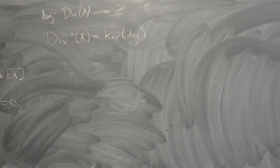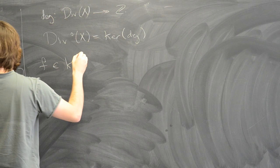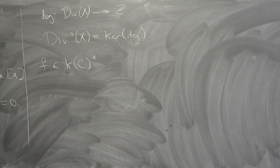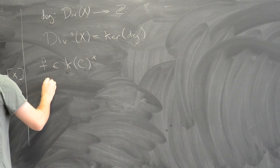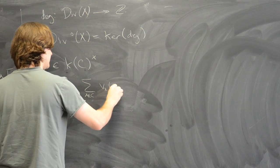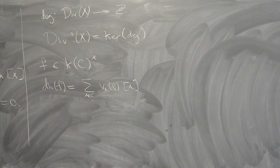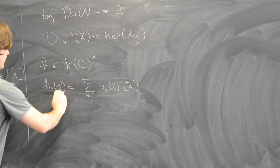There are some important divisors called the principal divisors. Suppose we have a non-zero function F in the function field of C. You can define the divisor of F as the sum over all points of C of the valuation of F at that point. That valuation is the order of the zero or pole of F at that point. F only has finitely many zeros or poles, so the sum is finite. Poles have negative valuations, zeros have positive valuations. A divisor of the form div(f) is called a principal divisor.